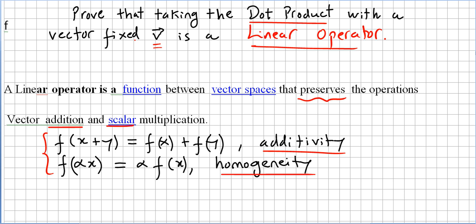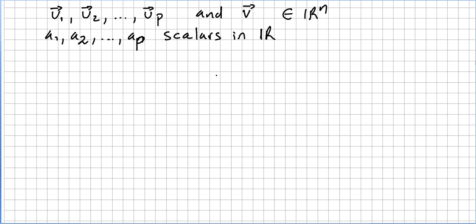So now we are asked to prove that taking the dot product with a vector fixed v is a linear operator in this sense. So for our proof, we are going to need vectors, we are going to need p-vectors in R^m: u1, u2, up to up. These are not components, these are vectors. So in order to distinguish, I made a small arrow above.